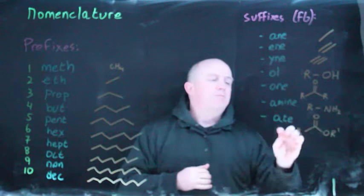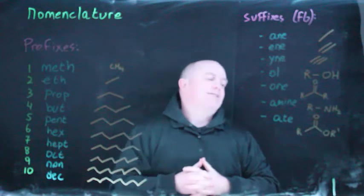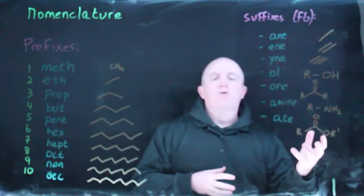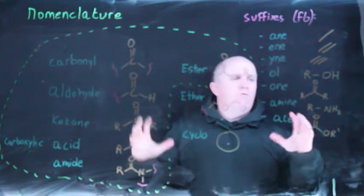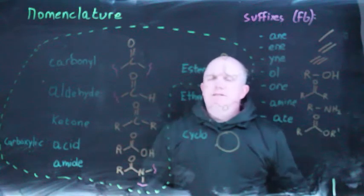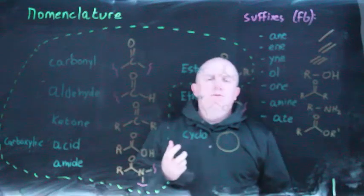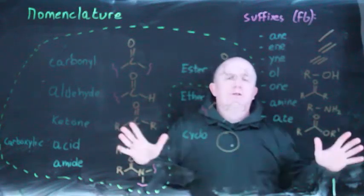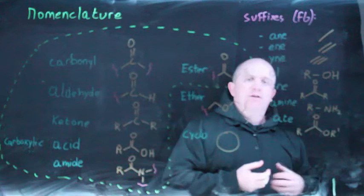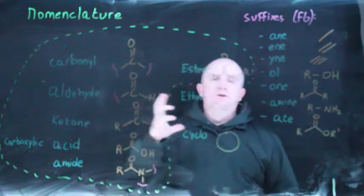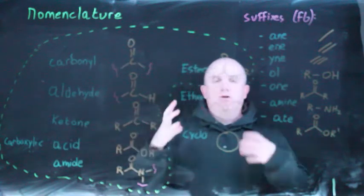'-amine' refers to the same general idea as an alcohol except with a nitrogen, meaning it has the capacity for two hydrogens, whether or not other carbon groups are attached. '-ate' is a suffix referring to an ester — ethyl acetate and butyl butyrate are examples. There are more functional groups to know than these, but these are definitely the ones to start with. They're also found in a table on the inside cover of your textbook.